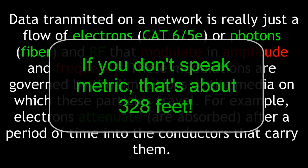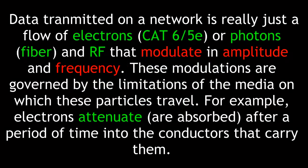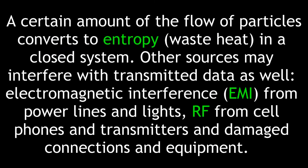After that, they tend to attenuate or be absorbed into the media, and you have to amplify the signal and resend it. A certain amount of the flow of particles converts to entropy or waste heat in a closed system. Other sources may interfere with transmitted data as well, such as electromagnetic interference or EMI from power lines and lights, RF from cell phones and transmitters, and damaged connections and equipment.